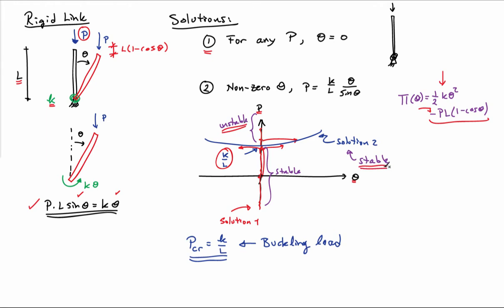Solution path two, if I evaluate the second derivative of pi on solution path two, I find out that I have a positive number. So solution path two is going to be a stable solution of my system.